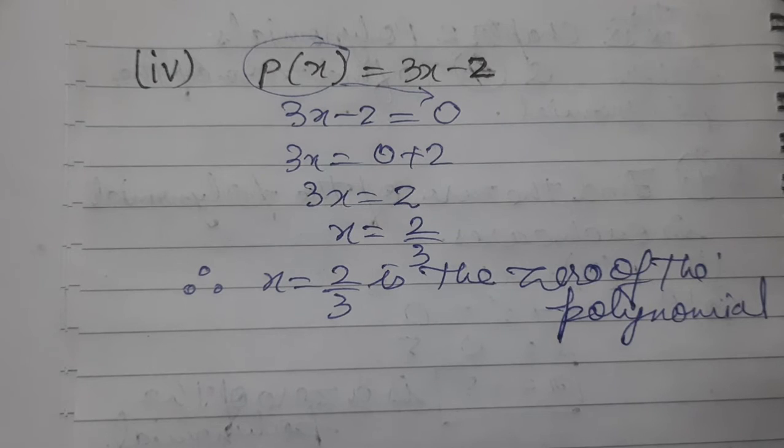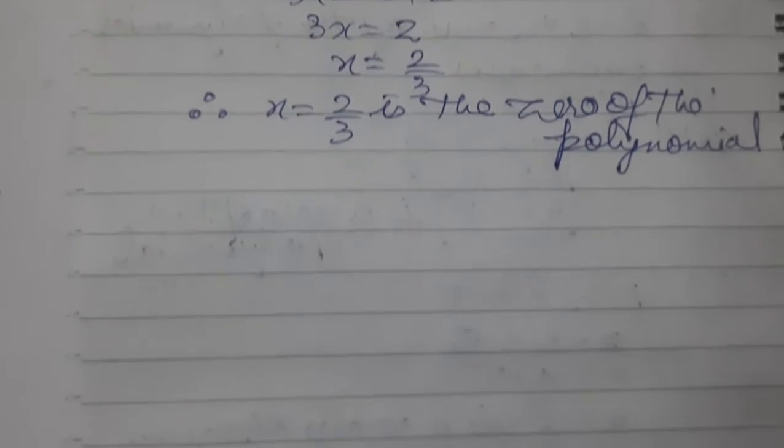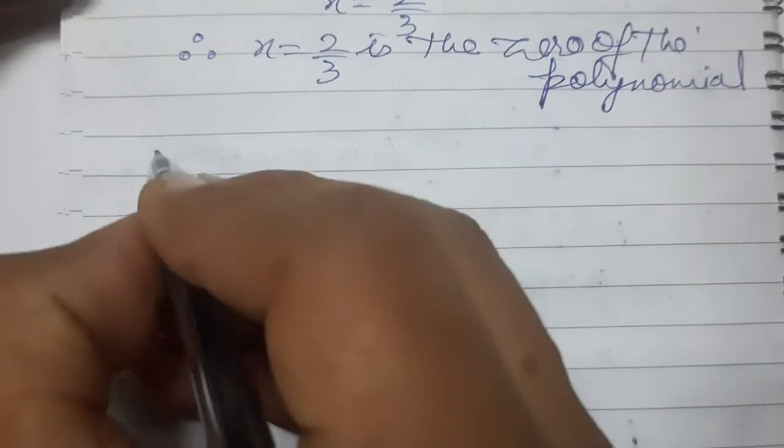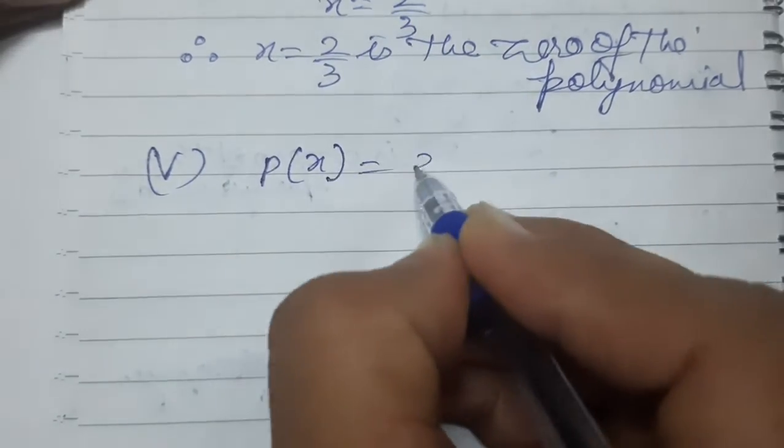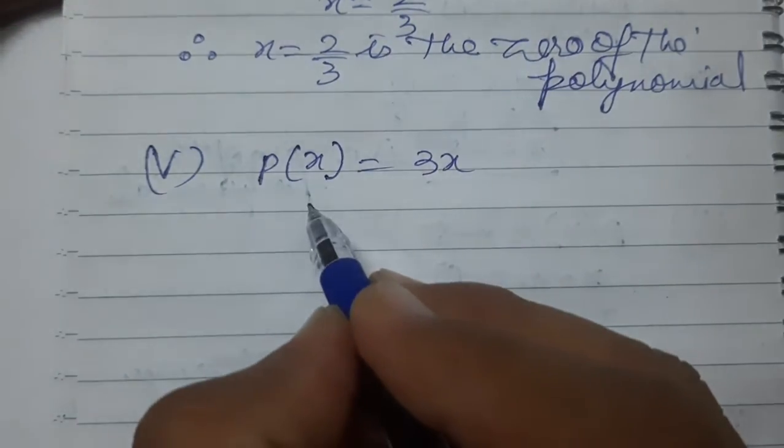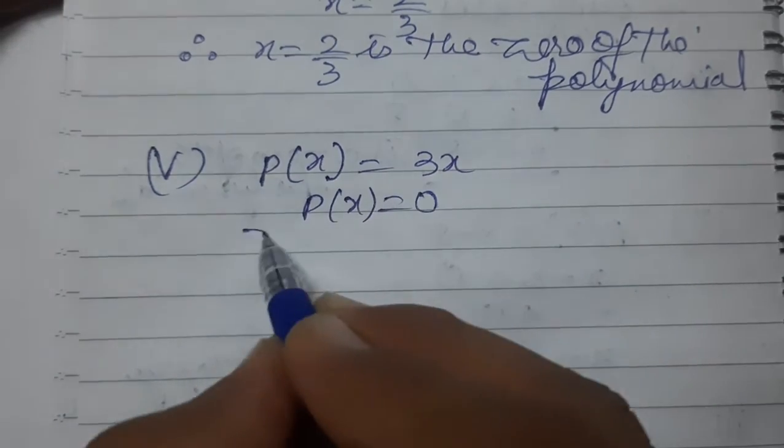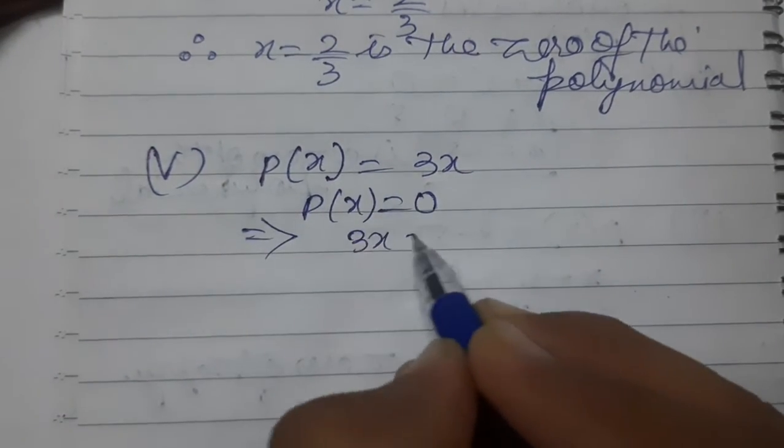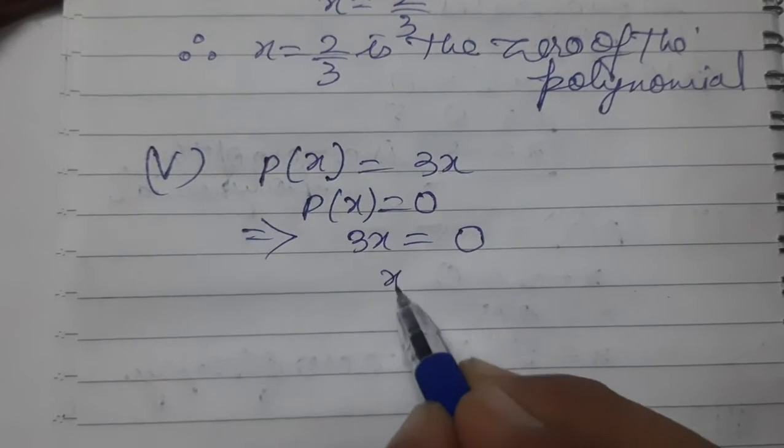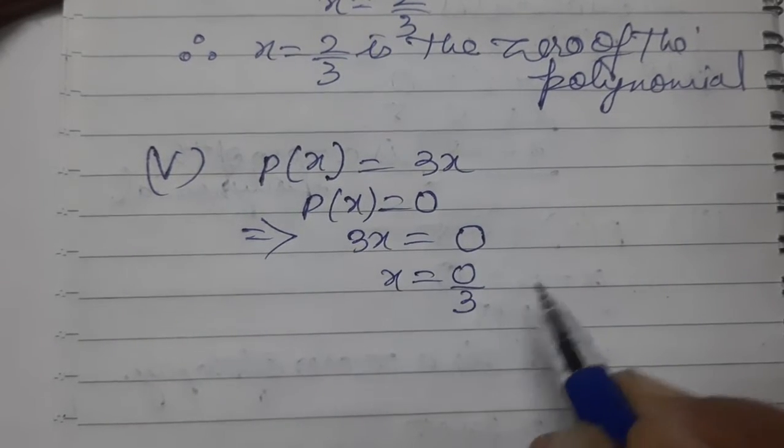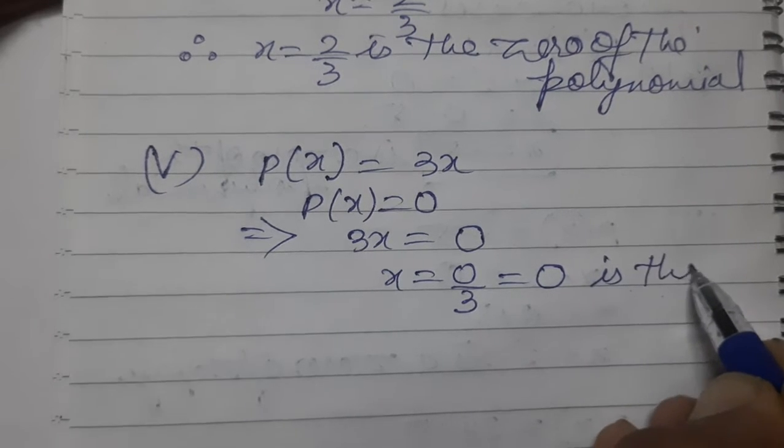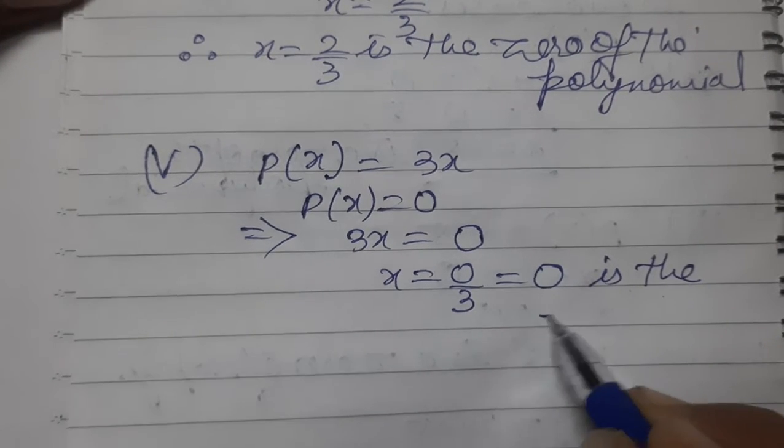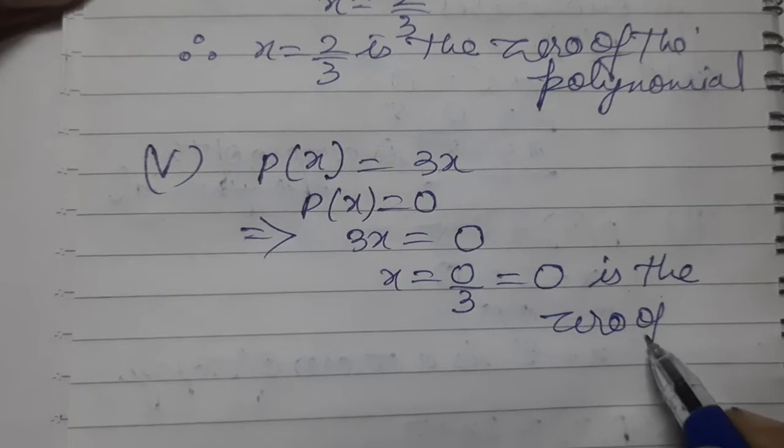Now question number 5. What is question number 5, children? P(x) equals 3x. Again we'll put the polynomial equal to zero. So what result did we get? 3x equals zero. Then x equals zero by 3. Zero by 3 equals zero. So zero is the zero of the polynomial.